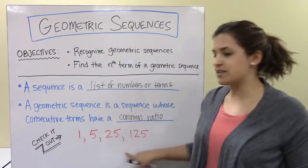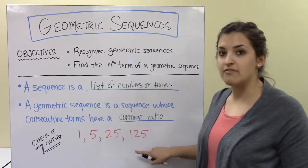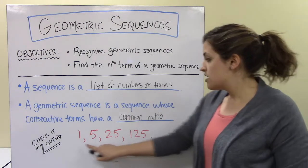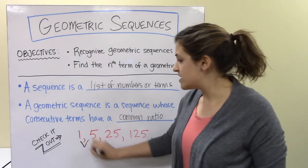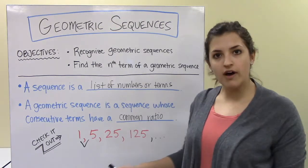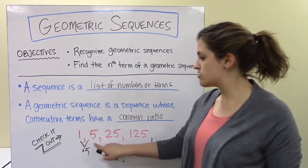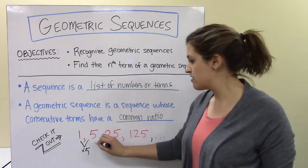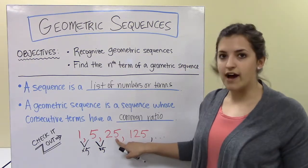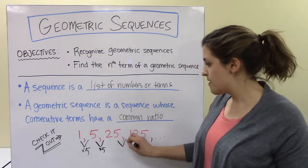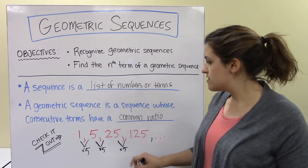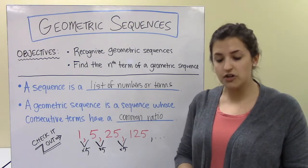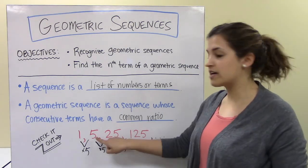Let's take a look at this sequence: 1, 5, 25, 125, and ideally this keeps going. Between 1 and 5, we can see that 1 times 5 gives us 5. Then 5 times 5 gives us 25, and 25 times 5 gives us 125. So the common ratio of this sequence is 5 — that's the ratio between terms that come one after another.